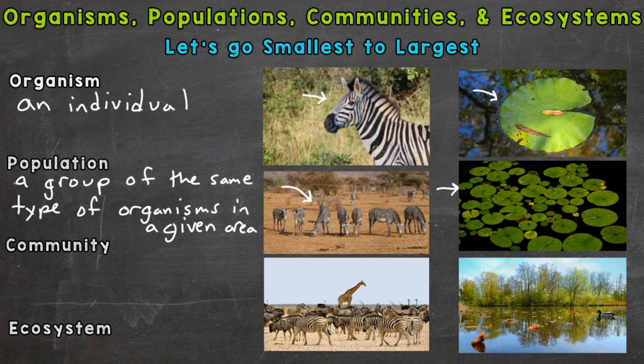Now, how do we determine what that area is? The scientist or person studying that population determines what the area or space means. It could be something small like a single pond, or maybe a couple square miles of land. Or it could be something large like a whole state, part of a state, even part of a country. So the scientist or person studying that population determines what that area or space means.